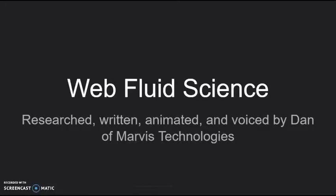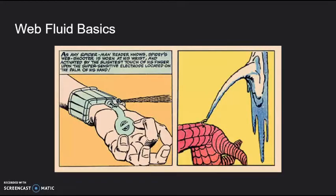In this week's video, I'll be going over the science of web fluid and talk about some ways to create artificial webbing. The basis of web fluid is a liquid that turns into a string-like structure when sprayed out of a pressurized container at a high velocity.